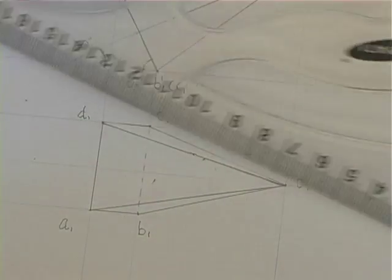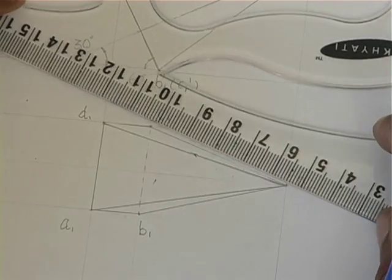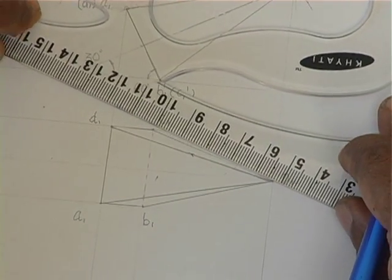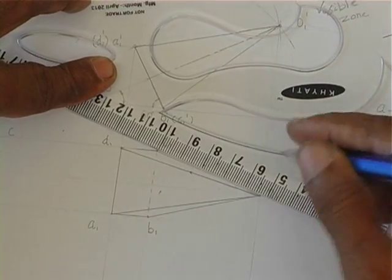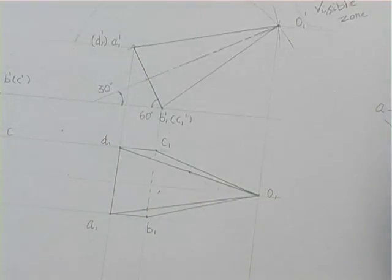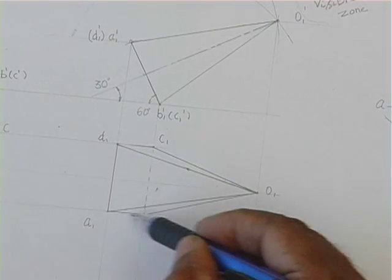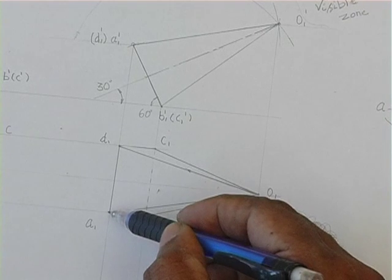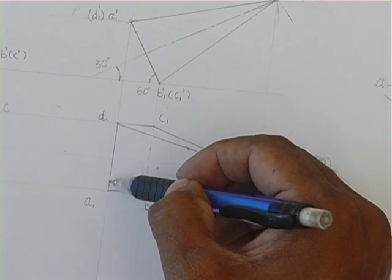We can complete the job view by just providing the dark lines. Now we have AB is dark, BC is dotted, CD is dark, DA is dark, OA dark, OB, OC, OD is dark.